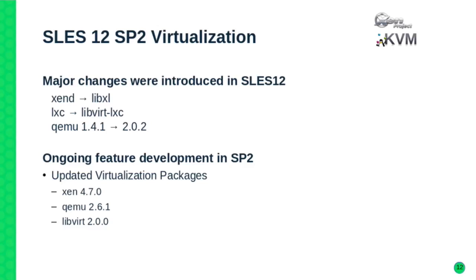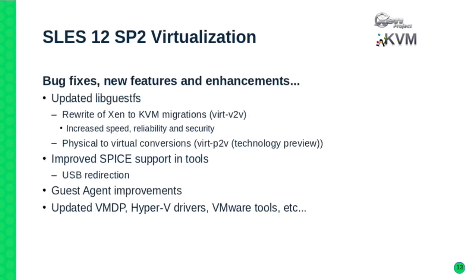QEMU was significantly updated in the SLES 12 days and we've continued this trend with SP2, updating the entire stack. The latest versions in SP2 are: Xen 4.7, QEMU 2.6.1, and LibVirt 2.0. Our general philosophy is to stay as current as possible while maintaining the stability you rely on.